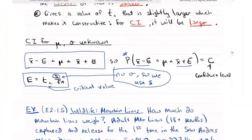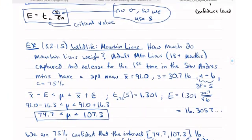Let's do an example real quick. Let's look at, this is 8.2 problem 15 from your book, and it's about mountain lions. And it says, how much do mountain lions weigh? And so they took a sample of adult mountain lions, 18 months or older, that were captured and released for the first time in the San Andreas Mountains.